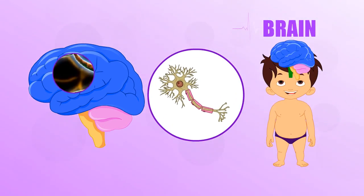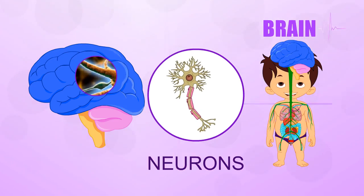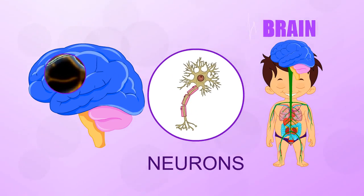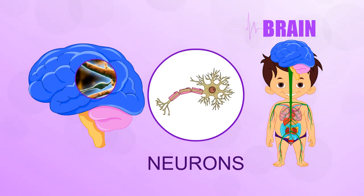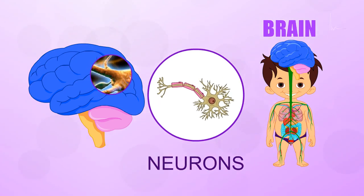Your brain contains billions of nerve cells called neurons that carry signals to and from different parts of your body through your central nervous system.